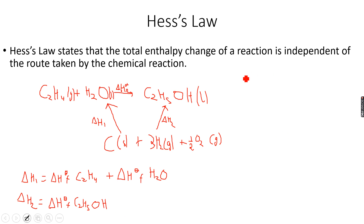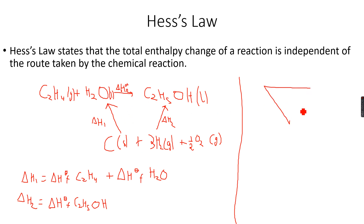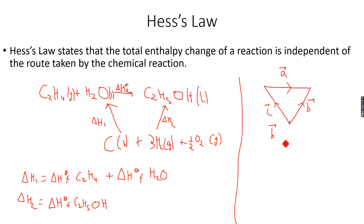Let's make our vector triangle. Take this as A, this as B, this as C. From this vector triangle you get the relation that B equals C plus A, because that is the rule of vectors.